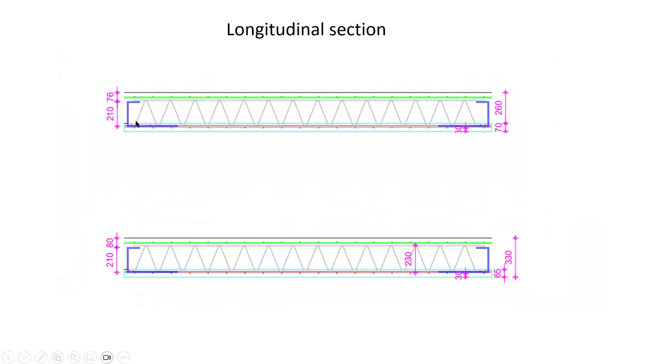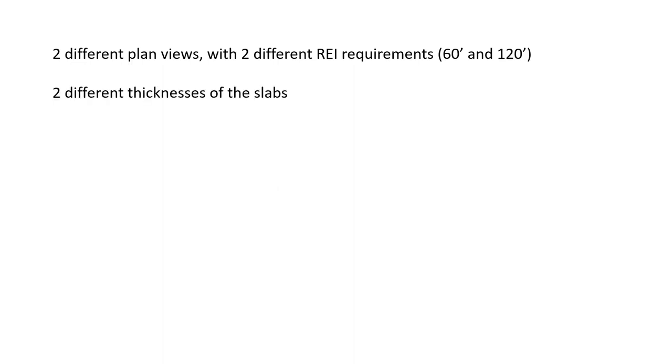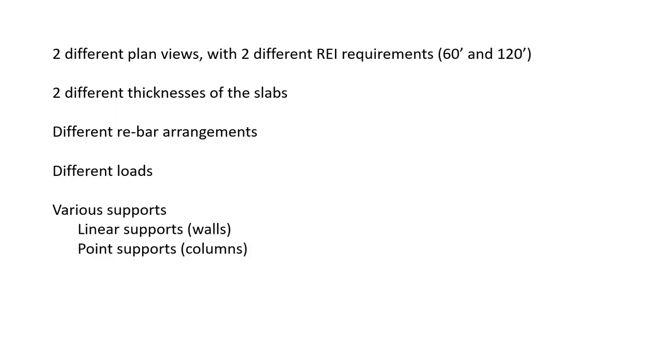Here is the longitudinal section where you see these bars which belong to the pre-slab. Because we had two different plan views at different floors with two different fire resistance requirements, we had two different thicknesses of the slabs. The rebars are arranged differently in different places of the building essentially because we have different loads in different zones. And we have various supports, some linear supports made of shear walls and some point supports made of columns. So parts of the slabs are voided but parts are flat slab nearly around the columns where insulating blocks are not located to increase the capacity with respect to shear punching.